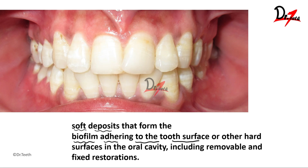Plaque can be seen on a tooth structure or any other hard surface of the oral cavity. Why only hard surfaces? Because they are non-shedding in nature. The gingiva is a shedding surface — the epithelial layer keeps undergoing shedding and new cells are regenerated. That is why plaque accumulation does not occur on the gingiva, buccal mucosa, or any other soft tissue. It only happens on hard tissue like the tooth, or on restorations or prostheses.